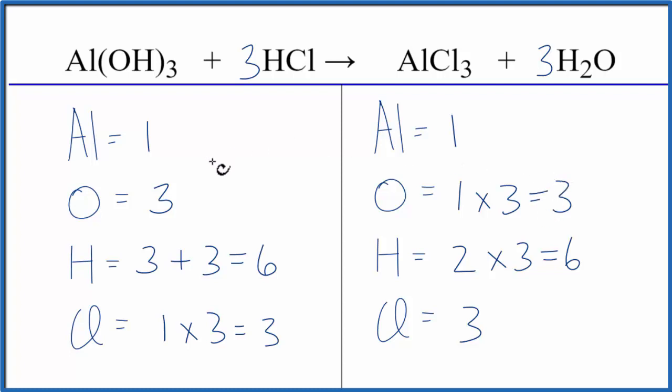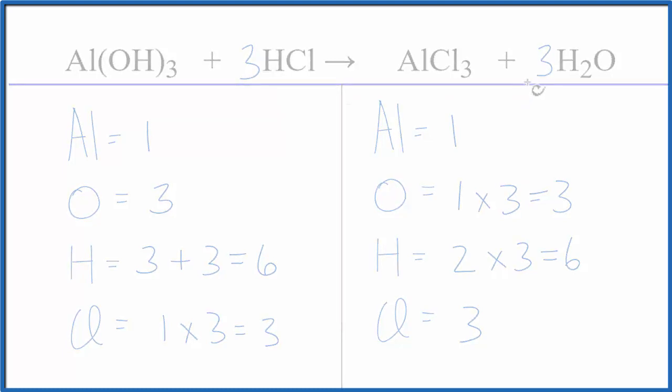This is Dr. B with the balanced equation for aluminum hydroxide plus HCl yields aluminum chloride plus water. Thanks for watching.